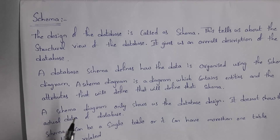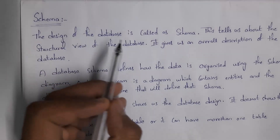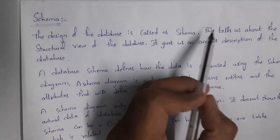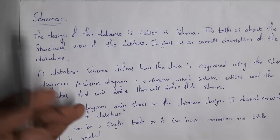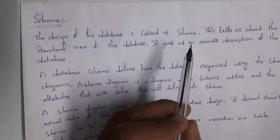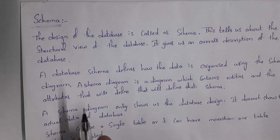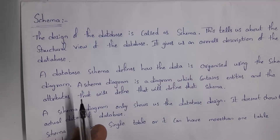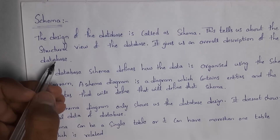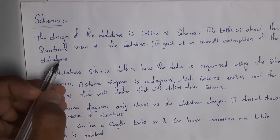First, I will explain what is schema. The design of the database is called schema. Schema tells us about the structural view of the database — it gives us an overall description of the database. Schema is nothing but the design of the database. If we represent the overall database in a structured format, then we call it schema. This schema will provide an overall description of the database.